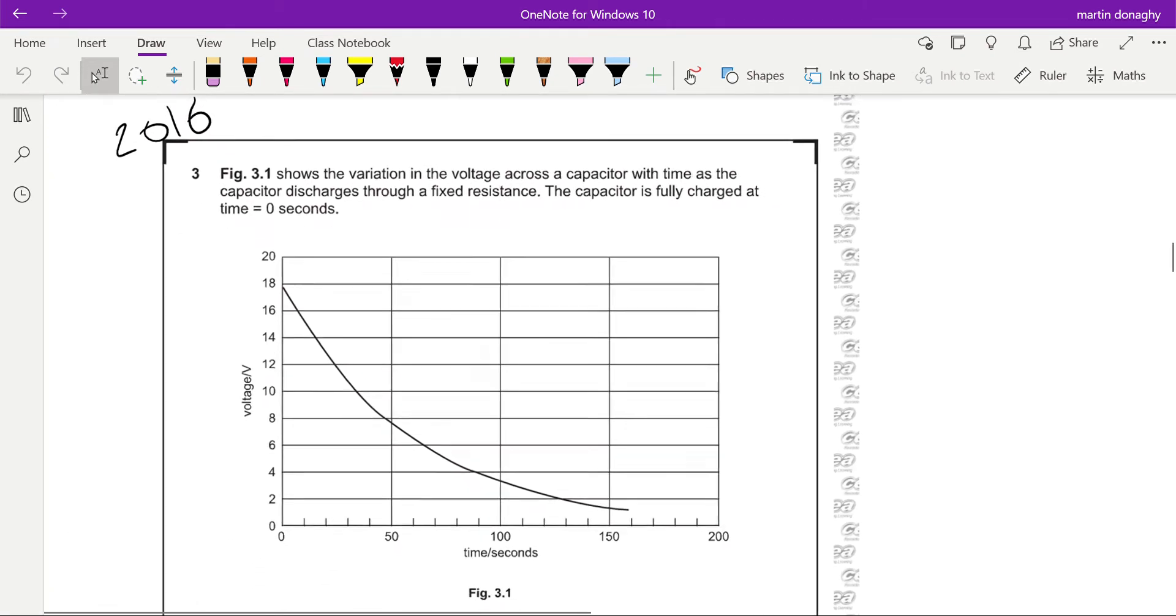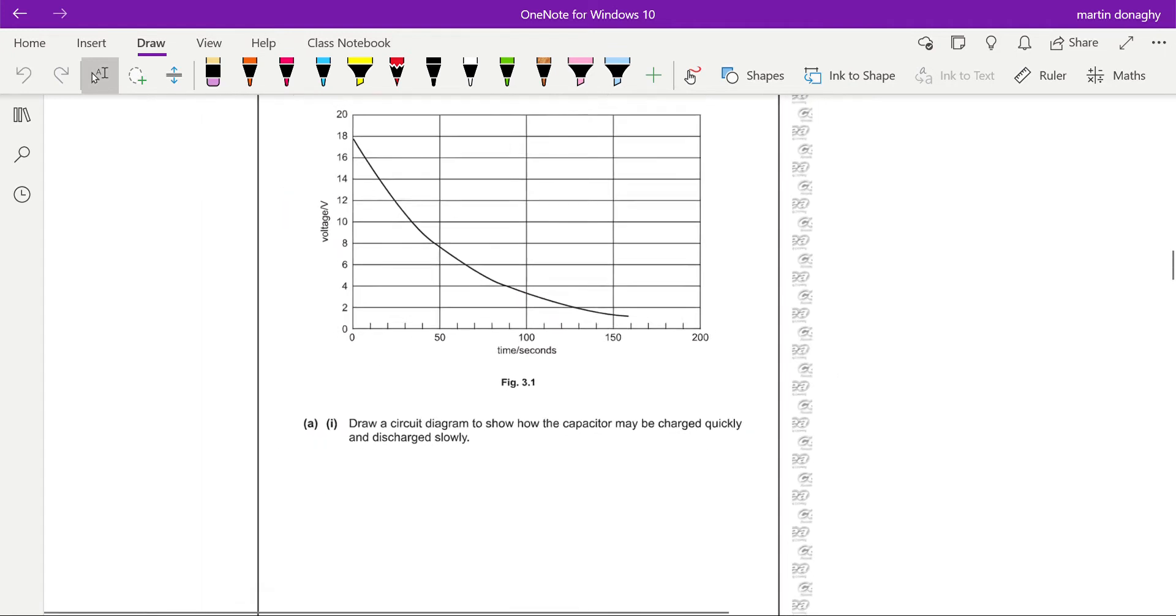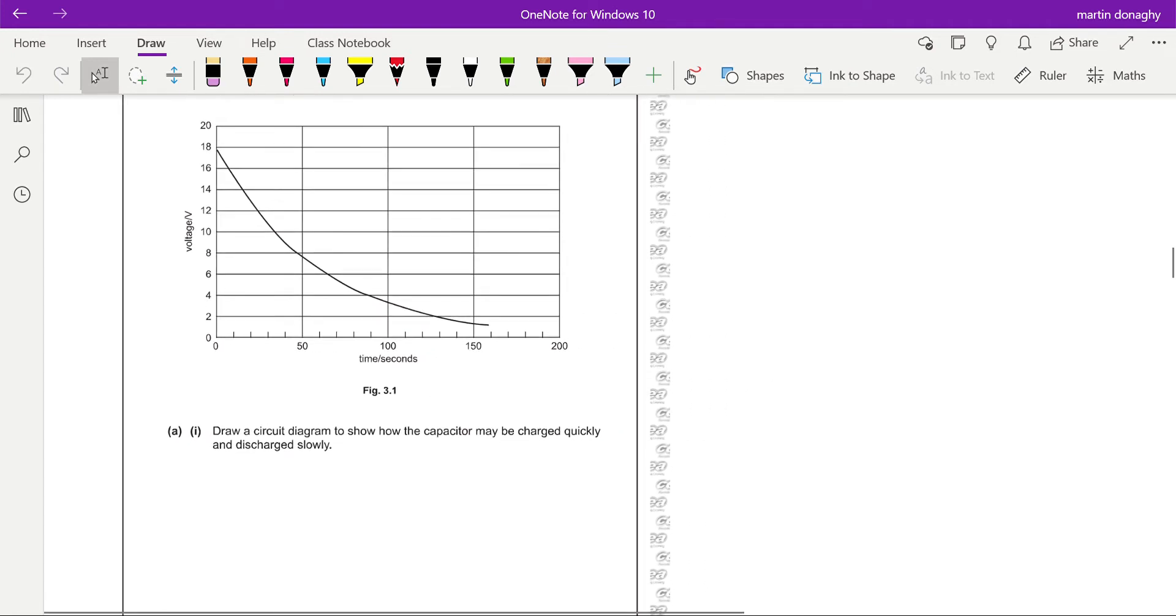Okay, let's look at the 2016 question. This shows a graph of how the voltage across a capacitor changes with time, and it tells us the capacitor discharges through a fixed resistance. The capacitor is fully charged at the start, time equals zero seconds. I don't know why we spend so much time looking at how we get straight line graphs when in exams they tend to talk about these curved ones much more. So, draw a circuit diagram to show how the capacitor may be charged quickly.